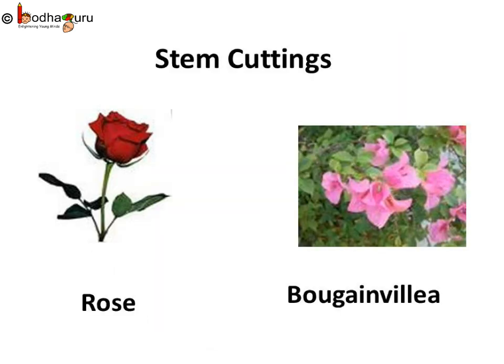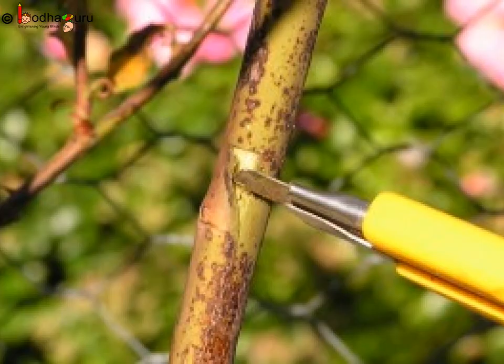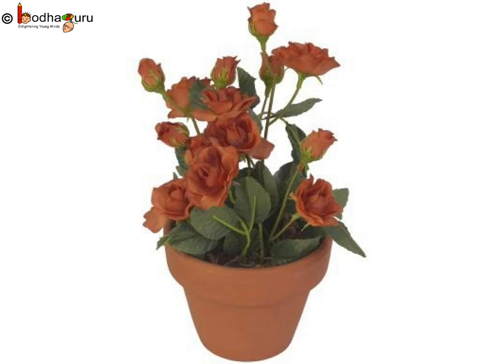There are some other ways of growing new plants. Like in a rose or bougainvillea, we can make small cuttings of the stem and plant them into soil at another place. There, they grow into a new plant.